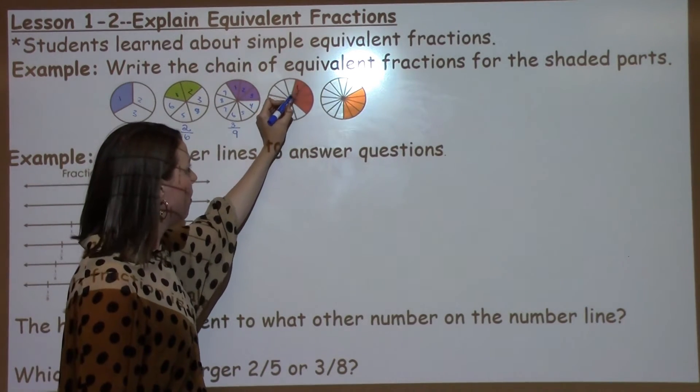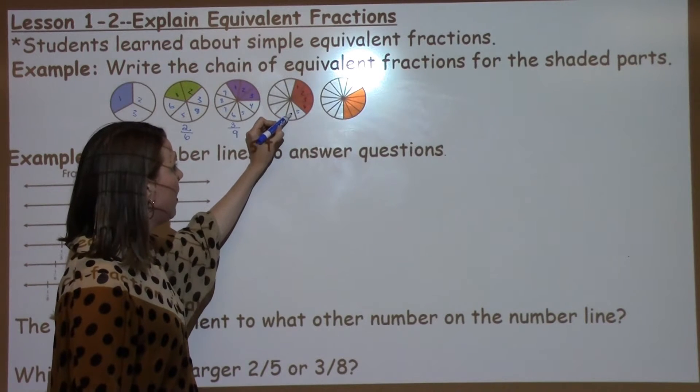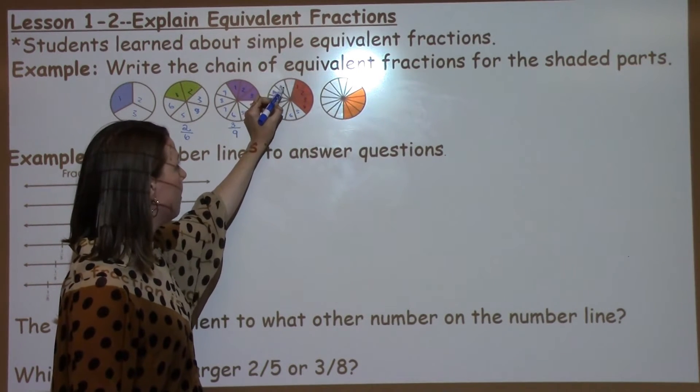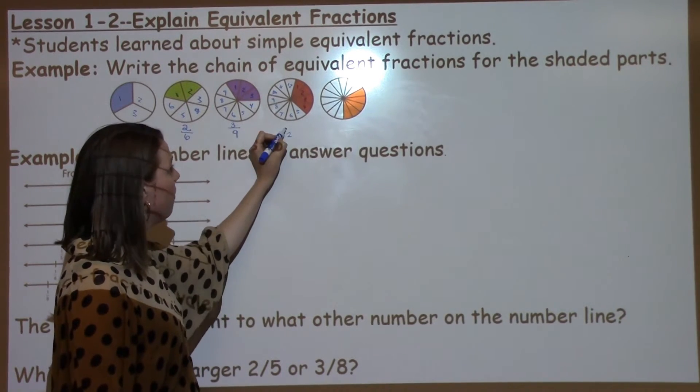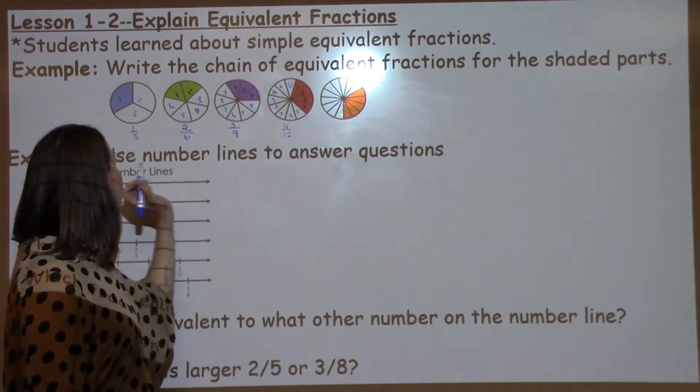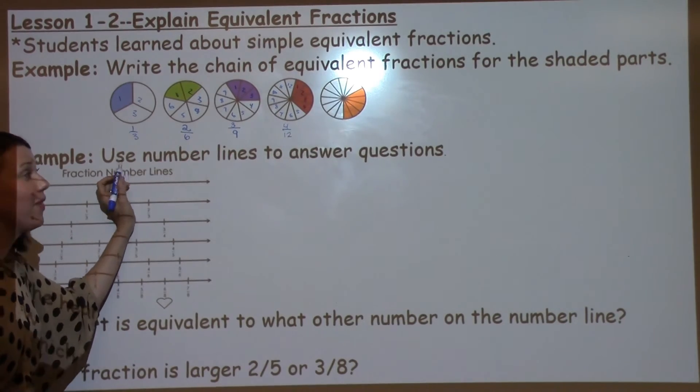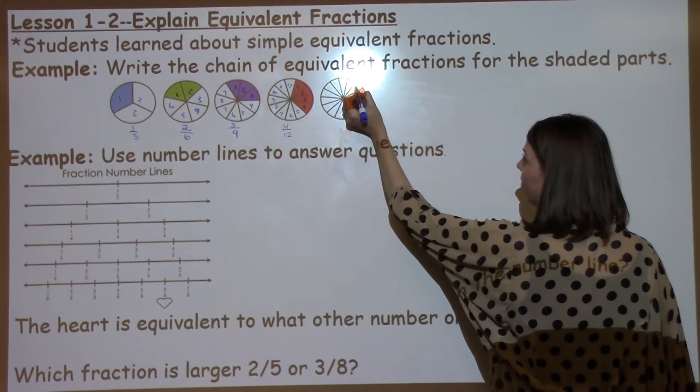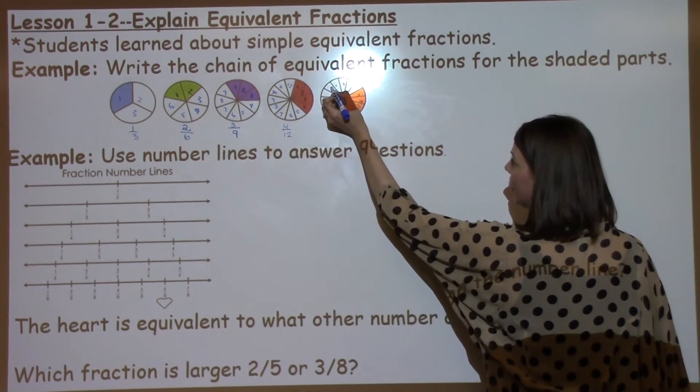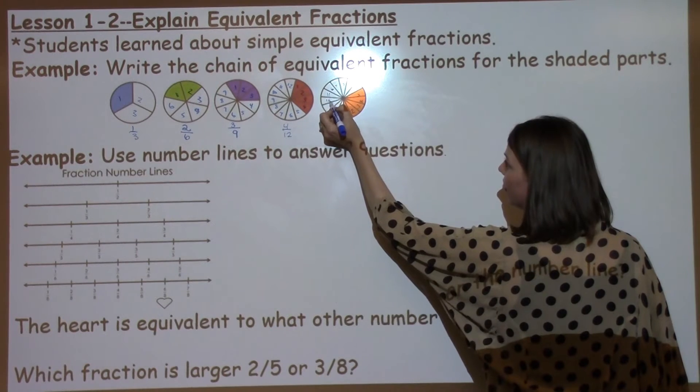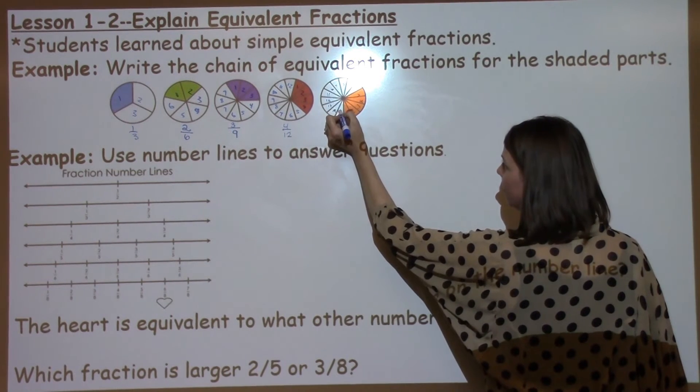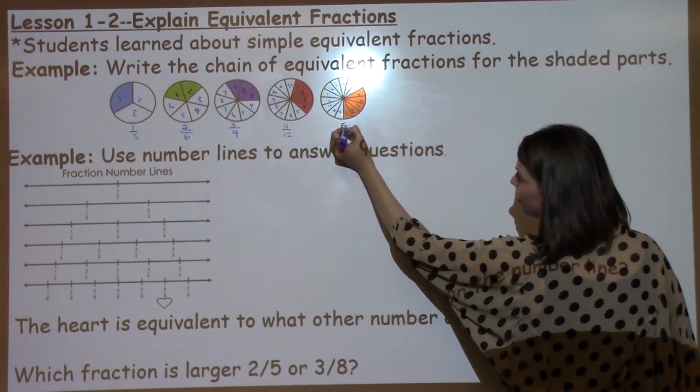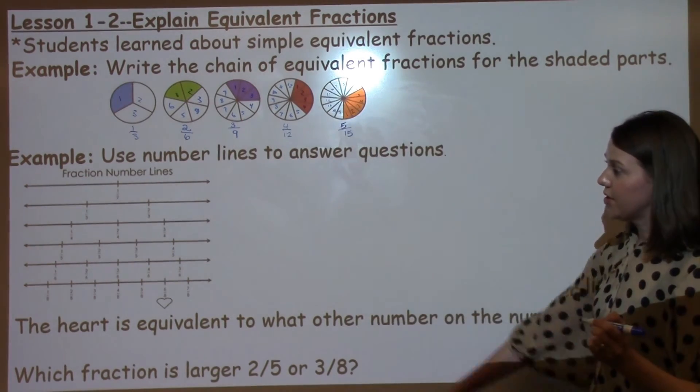Look at my next one. I've got 1, 2, 3, 4, 5, 6, 7, 8, 9, 10, 11, 12, 13, 14, 15. I've got 15 pieces for my denominator, and I've got 5 of them which are shaded. So I've got 5 fifteenths, which is equivalent to 1 third.